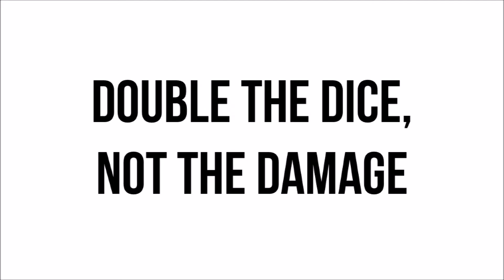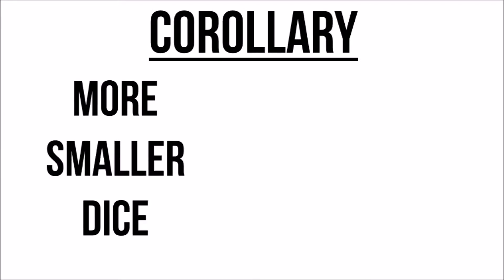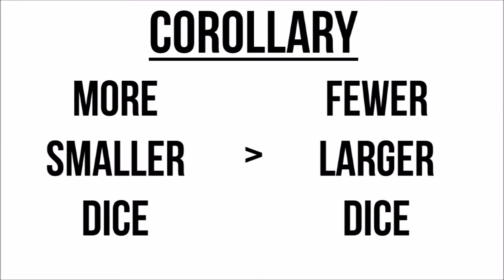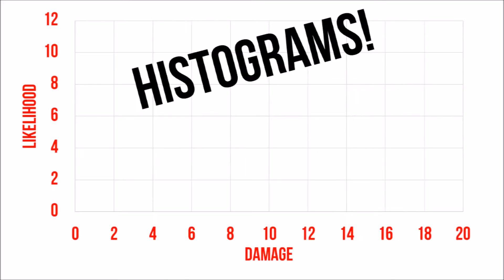At first this sounds like the worst of the two options, but remember the corollary to our rule: more smaller dice is better than fewer larger dice. Let's see how this corollary works out with the two interpretations of the critical hit rule by looking at more histograms.